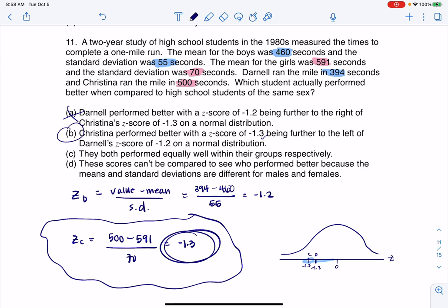And let's just check. C, yeah, they did not both perform equally well. These scores can't be compared? No, we can. We put them on z-score. So yeah, B is the correct answer.